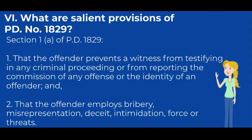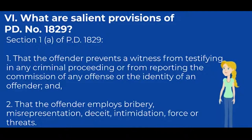What are the salient provisions of PD No. 1829? Section 1, Paragraph A: the elements are, first, that the offender prevents a witness from testifying in any criminal proceeding or from reporting the commission of any offense or the identity of an offender; and second, that the offender employs bribery, misrepresentation, deceit, intimidation, force, or threats.